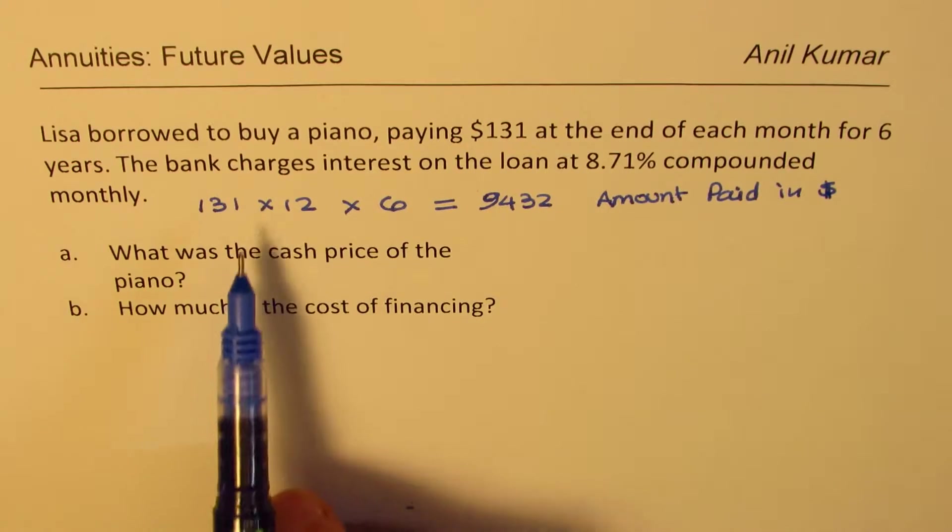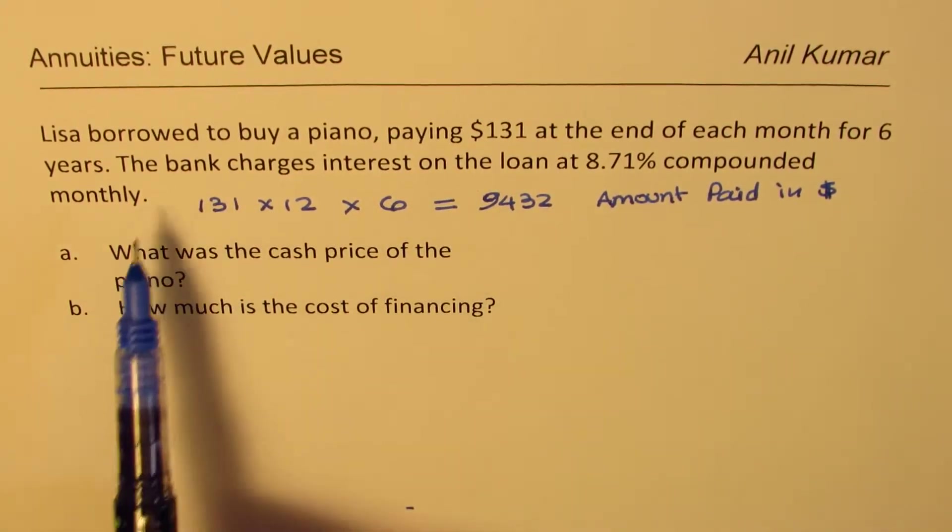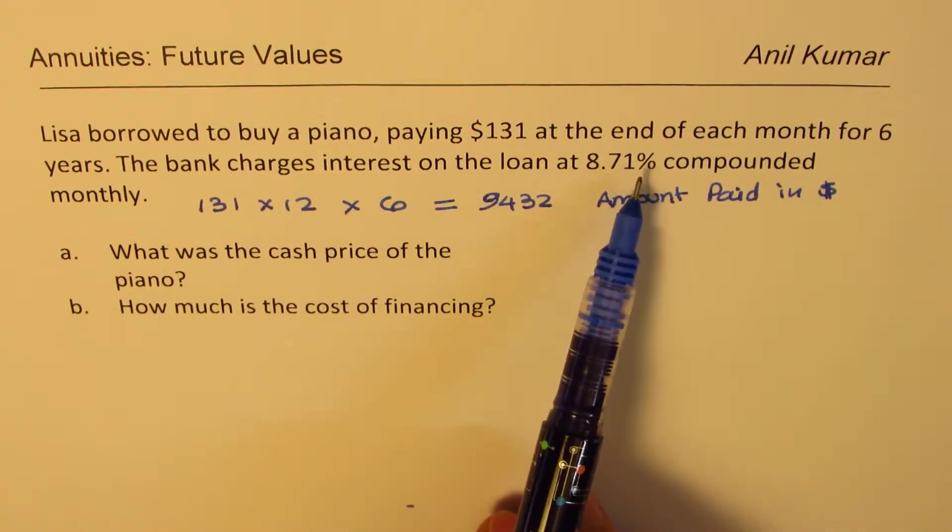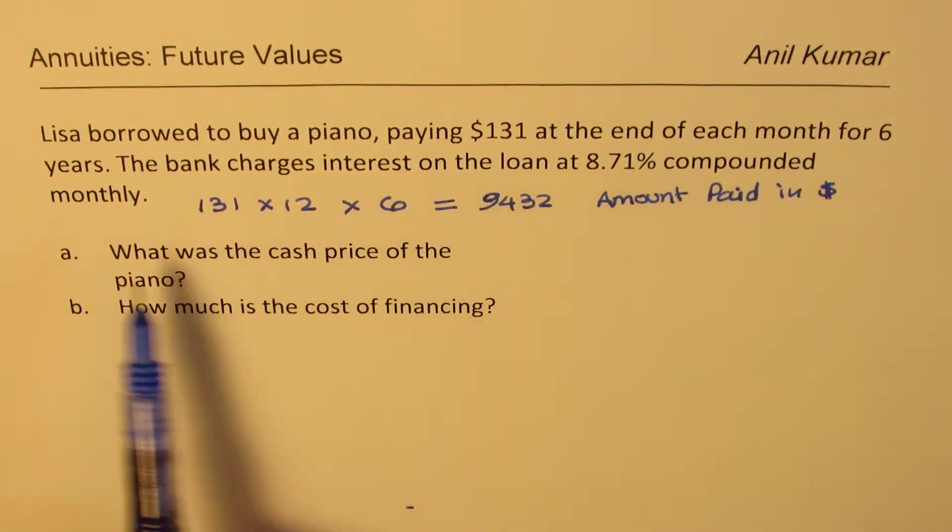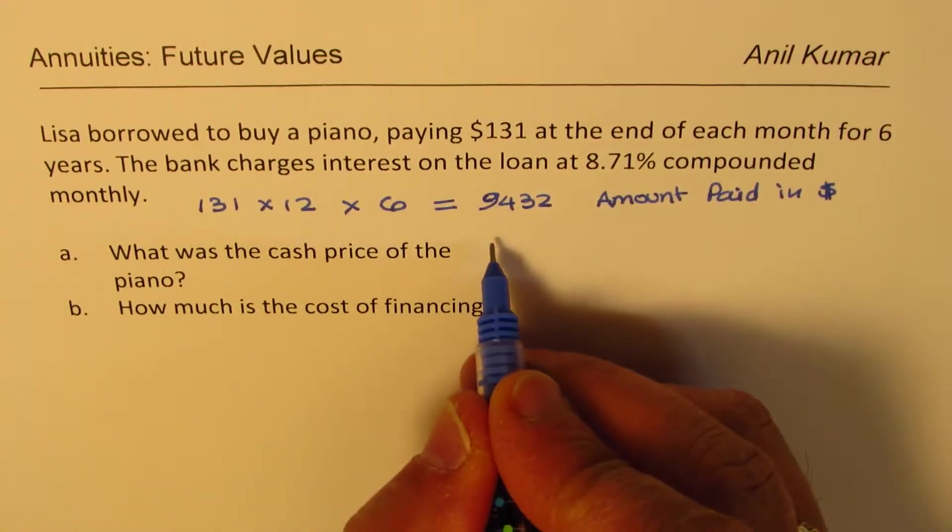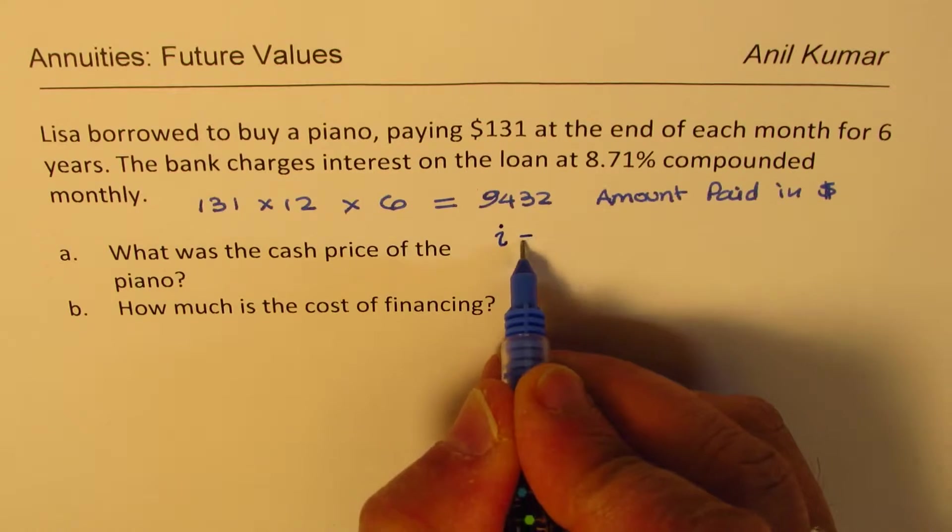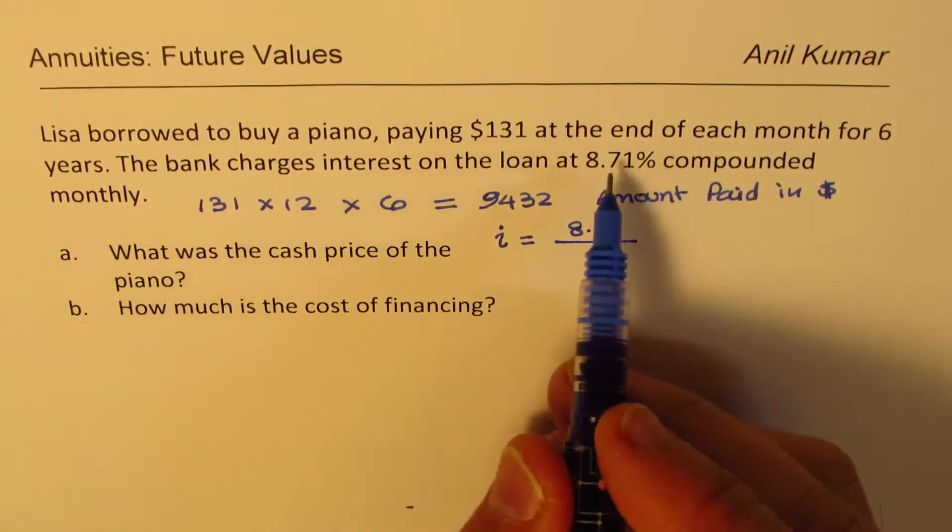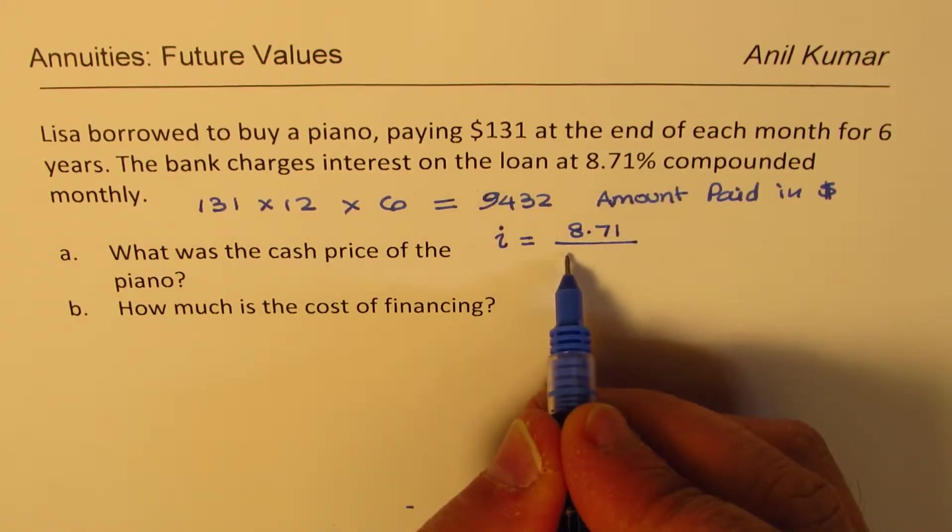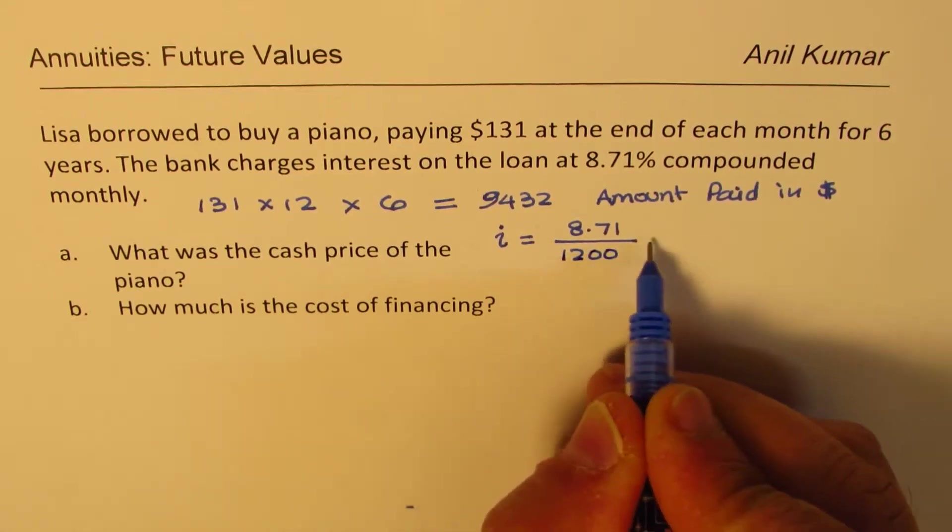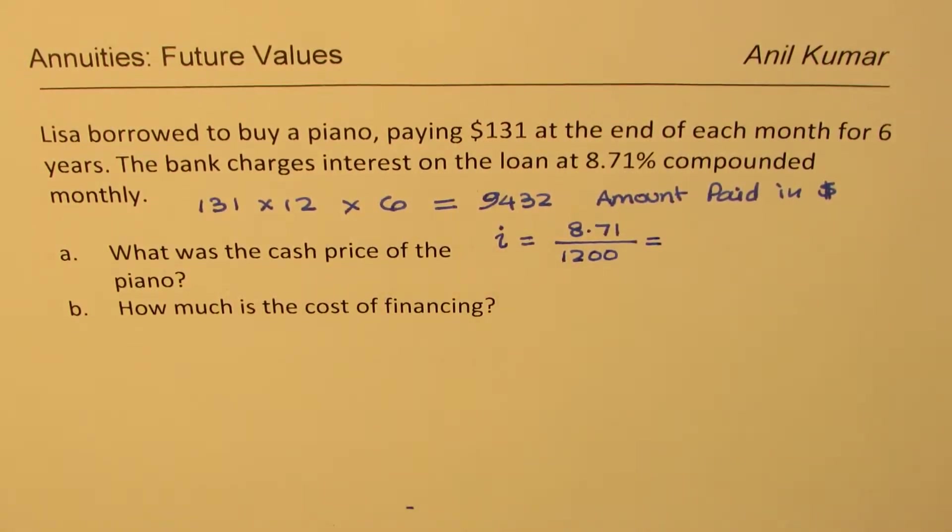Now let's talk about borrowing and charges. The bank charges interest on the loan at 8.71% compounded monthly. So when you are compounding monthly, then the interest rate will be what? So the interest rate will be 8.71 divided by, this is percent, so we'll do 100 and compounded monthly means 1200. Clear? So that becomes the interest rate.